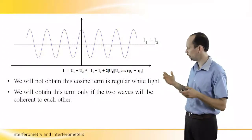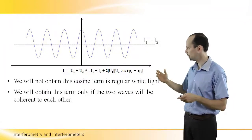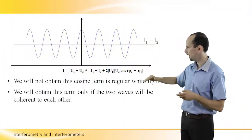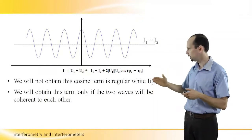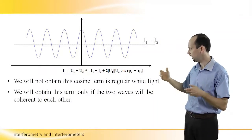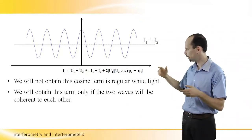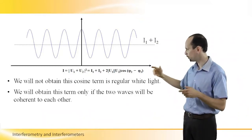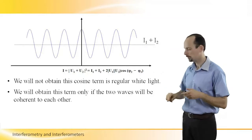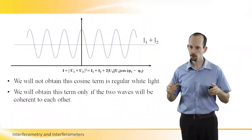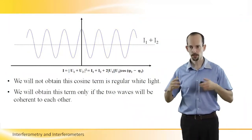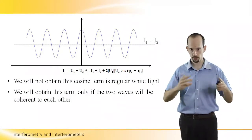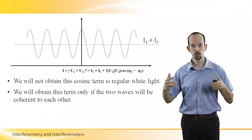Here you can see a visualization of this interference. You get I1 plus I2, which is a bias, and a cosine all over this graph. This cosine is actually the interference between the waves that captures the multiplication of the amplitudes and the phase information — or the phase difference between the waves, φ2 minus φ1. We will obtain this cosine term only if the light is coherent enough, or in other words, the beams creating the interference U1 plus U2 are coherent to each other.